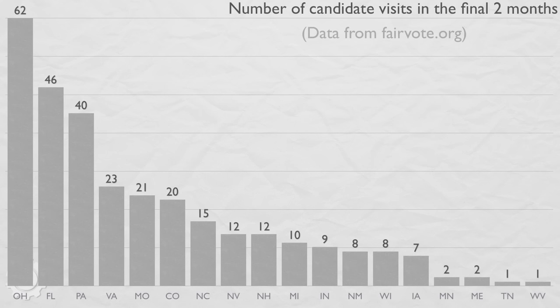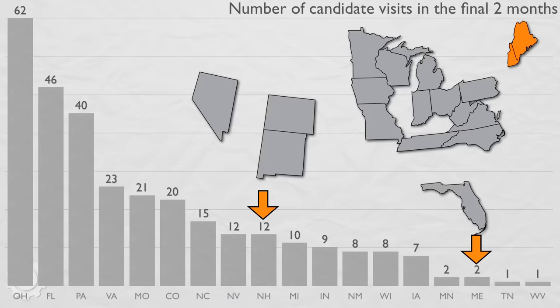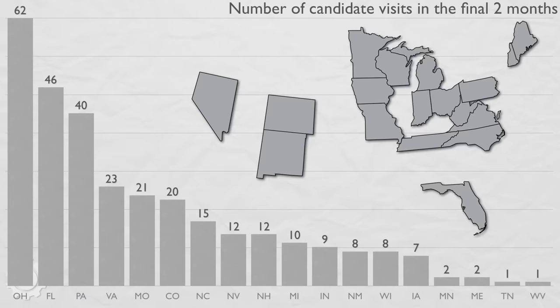Here's a graph showing the number of visits the presidential candidates paid to each of the states in the last two months of the previous election. If it looks like there are a few states missing, you're right. Only 18 of the 50 states received even a single visit from a candidate, and just two of those states — Maine and New Hampshire — have very small populations. The area of the country with the most small states is conspicuously missing. The Electoral College doesn't make candidates care about small states. But interestingly, the biggest states — California, Texas, and New York — are missing as well.